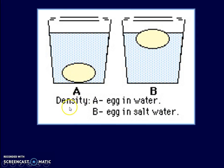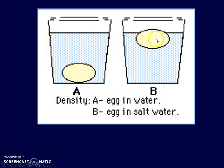This is similar to the demonstration here where an egg can float in salt water. When we add salt to the water, what we are effectively doing is increasing the density. Therefore, whatever object goes into the salt water will have a lower density relative to it, and it will float.